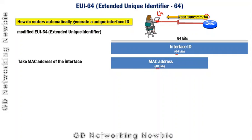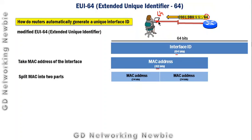So the first step is: take the MAC address. The next step is to split that MAC address into two parts — the first part and the second part. The MAC address has been divided into two 24-bit halves, but this still totals only 48 bits. We need 64 bits.